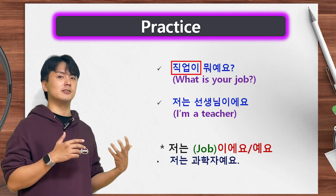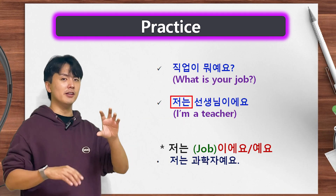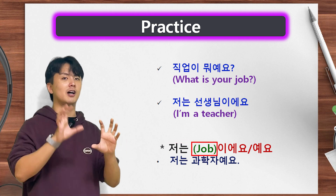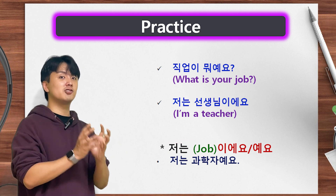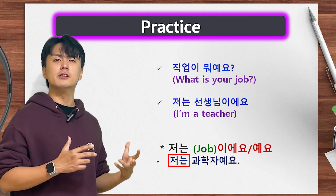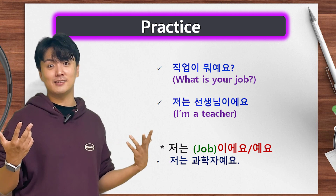What is your job? 직업이 뭐예요? I'm a teacher — 저는 선생님이에요. The pattern is 저는 [job]이에요. Once again, if the job ends with a vowel, you say 예요. For example, 저는 박자예요 — I'm a scientist.